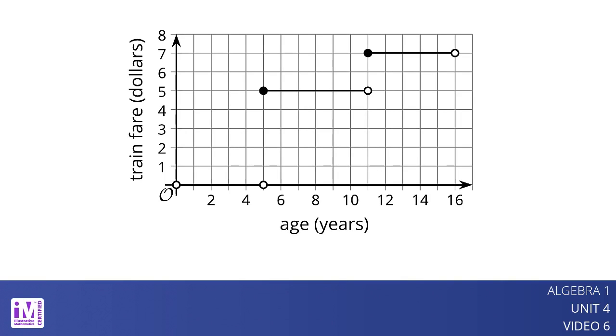It is important to consider the value of the function at the points where the rule changes or where the graph breaks. For instance, when a child is exactly 5 years old, is the ride free or does it cost $5?